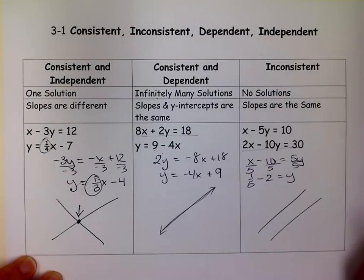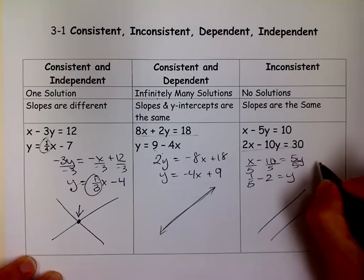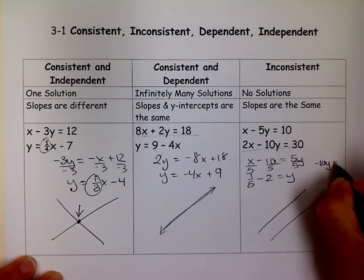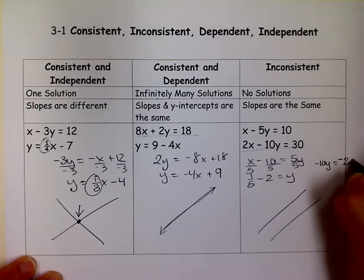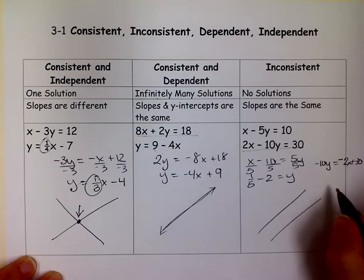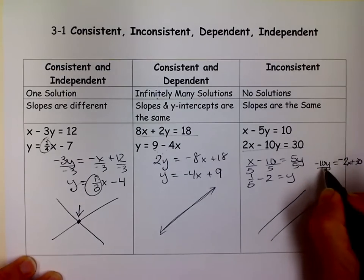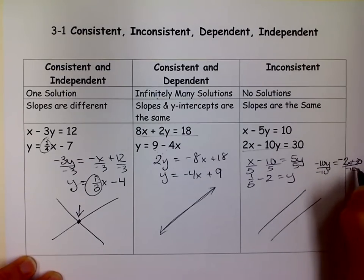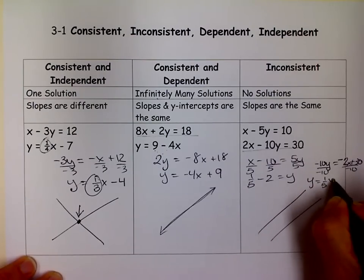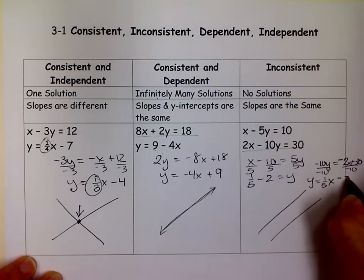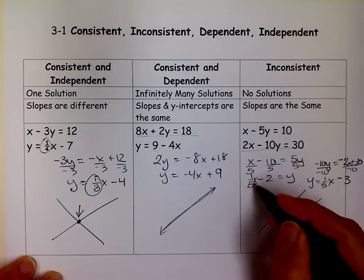So going to this one, if I just move the 2x over there, I get negative 10y equals negative 2x plus 30. If I divide by negative 10, I get y equals 1 fifth x minus 3. So notice, oh, I forgot my x there. Sorry.